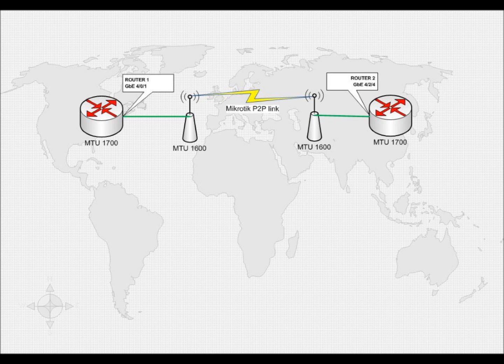MTU on router interfaces is set to 1700, and I've set 1600 on the MikroTik Sextant. I could put more — for example 2000 — in that case I need to put a bigger MTU on the routers, for example 9000. The limits vary by vendor.